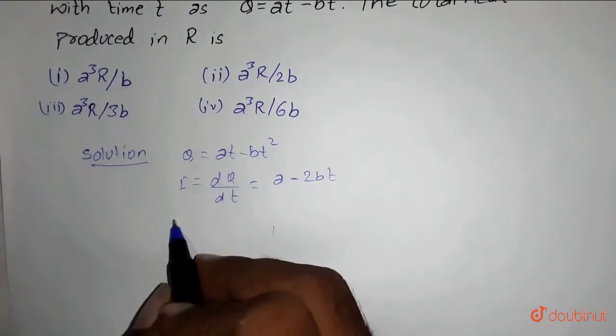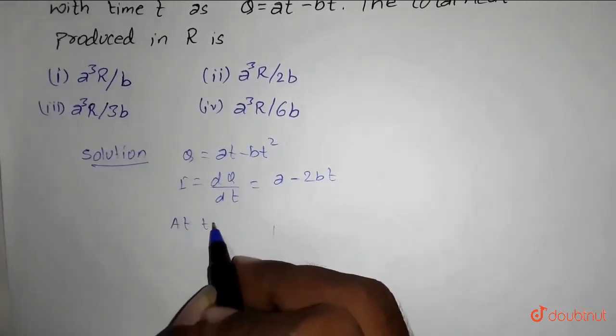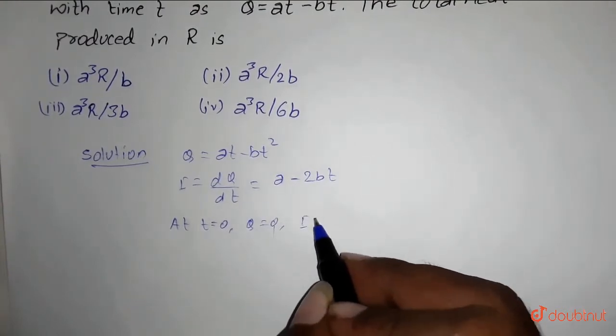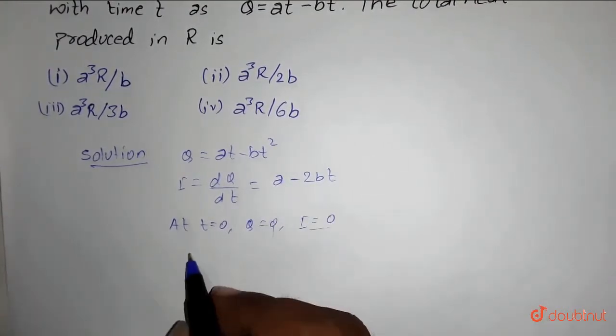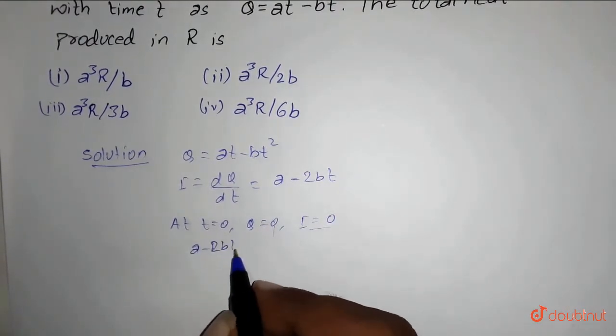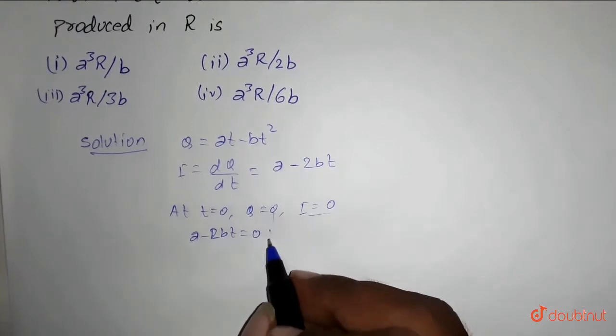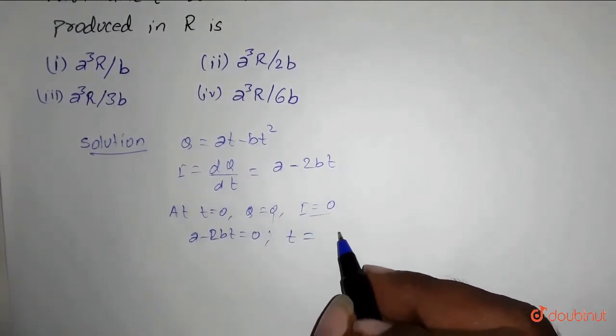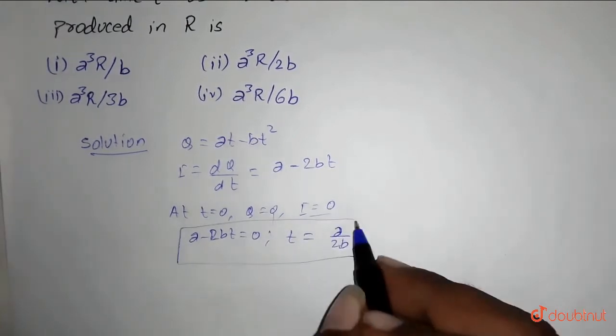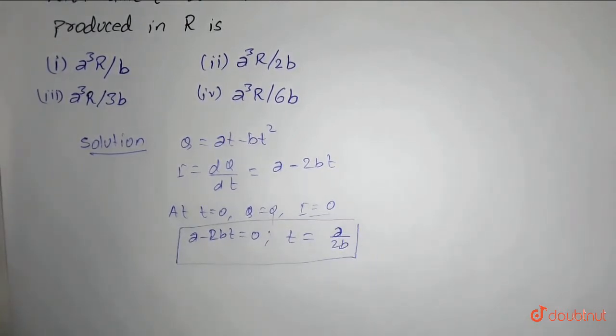So at t equals 0, q was 0 and i was also 0. So i was 0, that means a minus 2bt equals 0. So from this we get t equals a by 2b. So i was 0 at time t equals a by 2b.